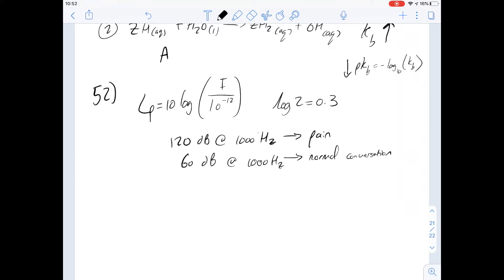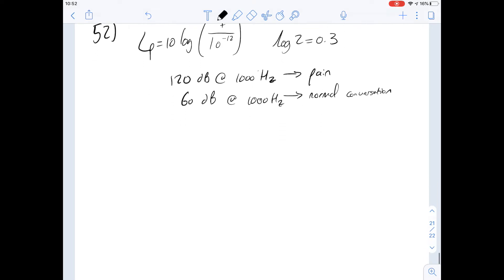We're asked the change in sound intensity level from normal conversation threshold of pain corresponds to an increase in sound intensity by a factor of what? We're given an equation here to actually work out the sound intensity. Let's work out first of all the sound intensity at the higher value so when we're in pain.